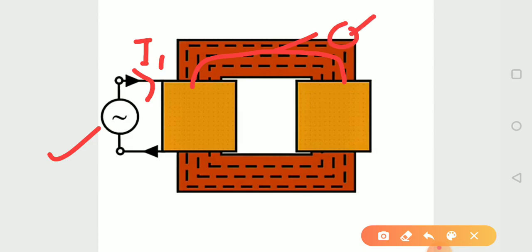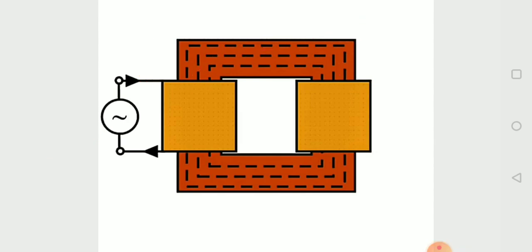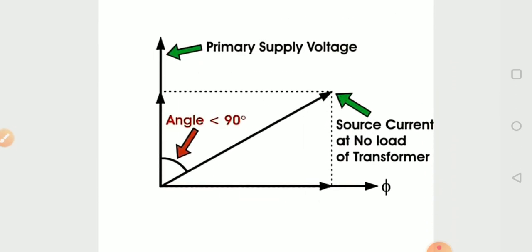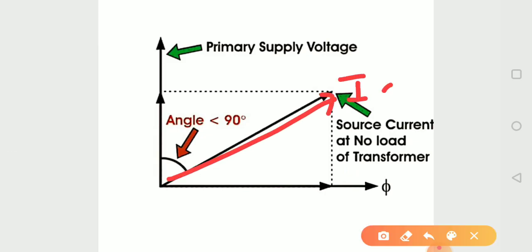This is the flux which links to the core. The magnetizing current is not the pure magnetizing current but is slightly greater than the actual magnetizing current. So we can say that the magnetizing current has two components. One component is the magnetizing current which is utilized to magnetize the core, and the other component is used for compensating the core loss.